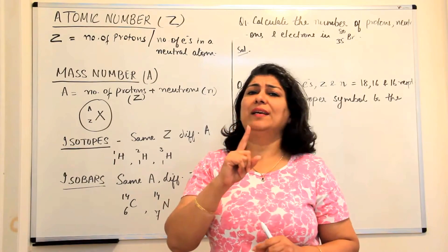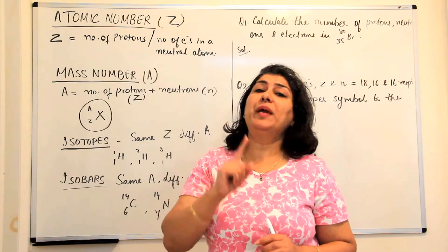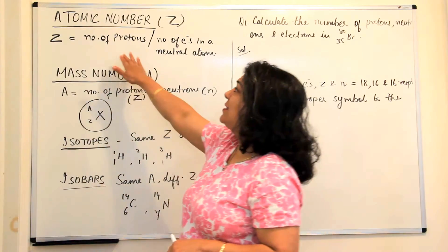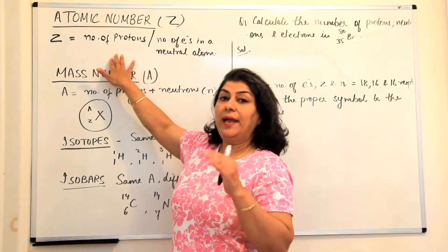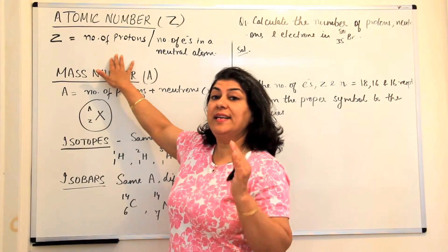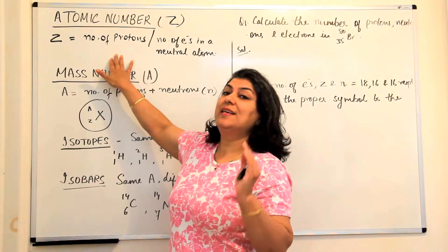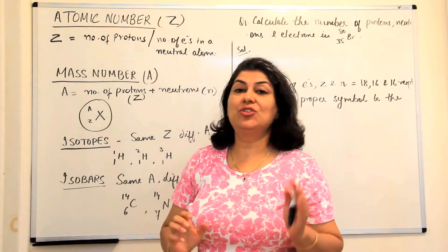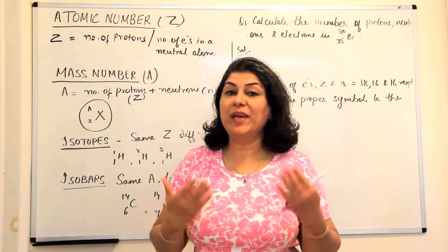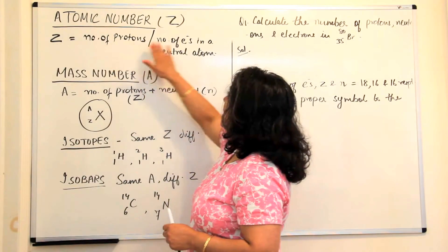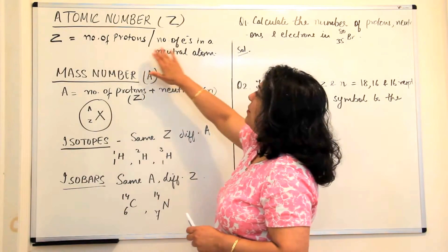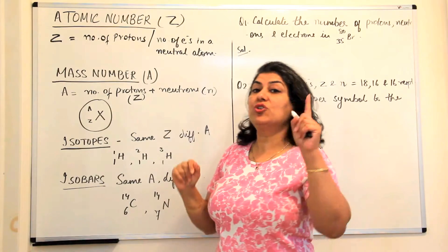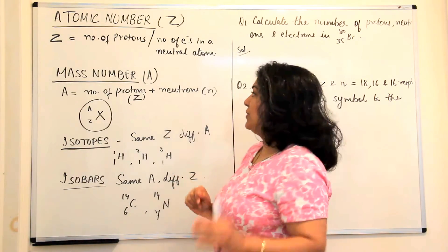There is one thing which remains constant in chemical reactions, and that is the number of protons. Hence the identity of an element is the number of protons, known as its atomic number. So atomic number is the number of protons, which is equal to the number of electrons only if the atom is neutral.